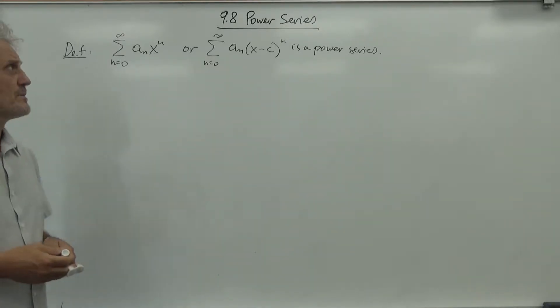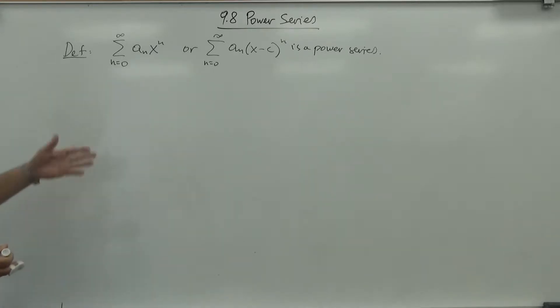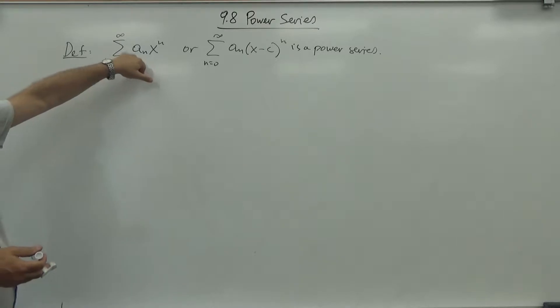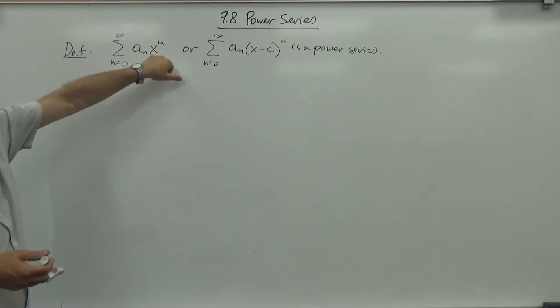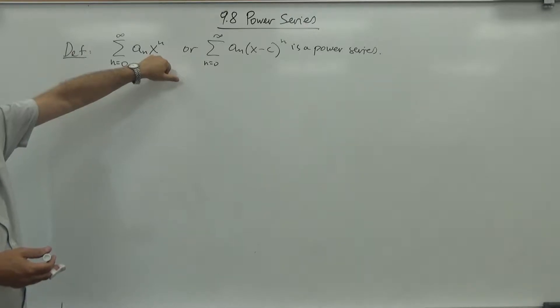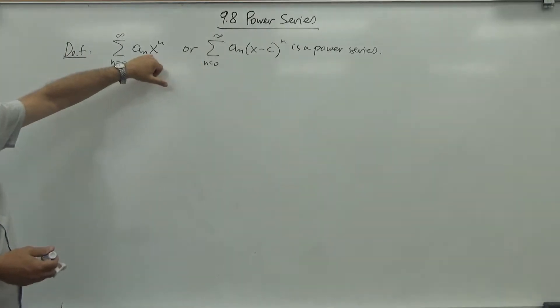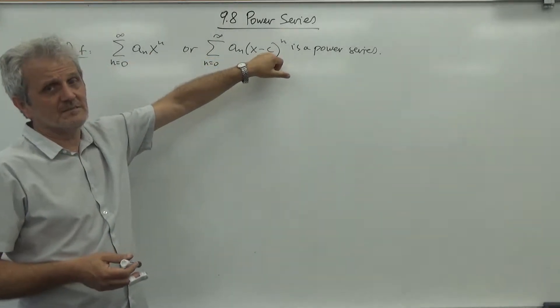Our topic for today is section 9.8, which is power series. A power series looks like this: sum of a_n x^n, where x is a variable. Or it could be a_n times (x minus c)^n. The first form is centered at zero, and the second is centered at c.